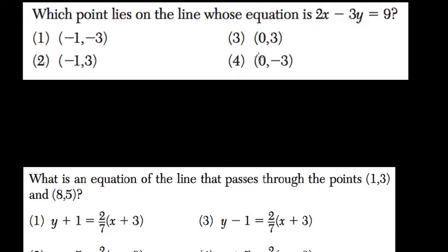Let's start with choices 3 and 4. So we have 2x minus 3y equals 9. If we plug in 0, do we get 3? If we do, then it's a solution for the line. So 2 times 0 minus 3 times 3, does that equal 9? 2 times 0 is 0 minus...